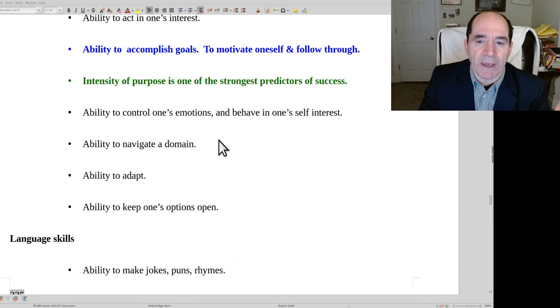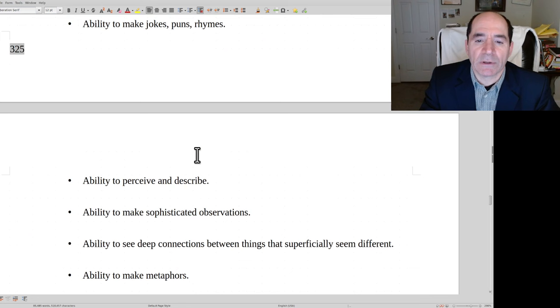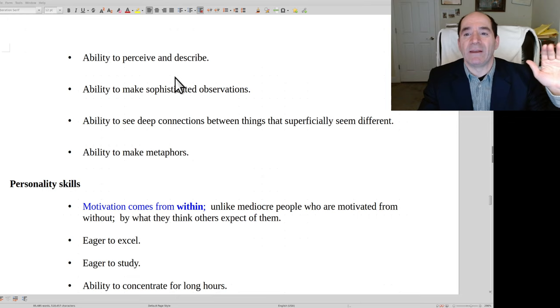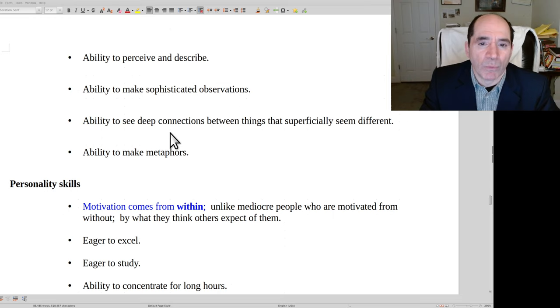An ability to control one's emotions, behave in one's self-interest, follow through, be motivated. Navigate a domain. Verbal intelligence: can make funny jokes and rhymes and puns. A lot of the people who are really good at that, they're not good at school. They don't care about school but they're actually really bright. Ability to perceive and describe also comes from reading a lot. I've known some people who were really clever and funny when they were in a phase in their life when they were reading a lot, and that same person, once they quit reading, they were no longer so funny. They no longer had that zip and zest in their ability to come up with words. One of the things that's a sign of somebody who's really good in the field is they can make sophisticated observations, can perceive them and describe them, can see the deeper connections. Those are signs of a real expert.